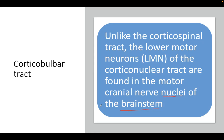The cranial nerves found in the brainstem are nine, ten, eleven, and twelve — that is, the glossopharyngeal, the vagus nerve, the spinal accessory, and the hypoglosal nerve. Please take note: the lower four cranial nerves are found in the brainstem.